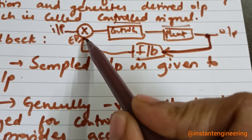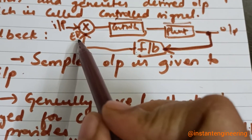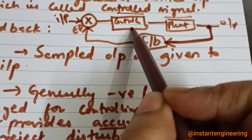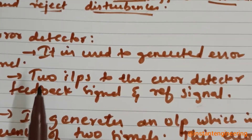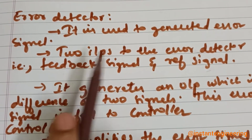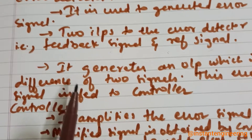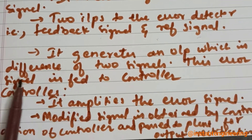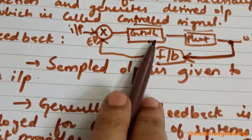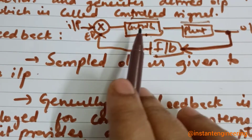The error detector has two inputs: the reference input and the feedback input. It detects errors between these two signals and sends their difference to the controller. The error detector generates an error signal — the difference of the feedback signal and the reference signal — and this error signal is fed to the controller.